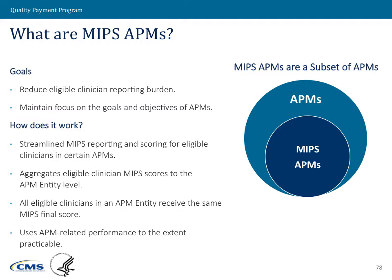So what are MIPS APMs? The APM scoring standard is a way to bridge the gap between APM participants and the MIPS program. These two tracks overlap a little bit — if you're not in an advanced APM and excluded from MIPS, you'll still be subject to the MIPS reporting requirements and payment adjustments, but you're also doing activities under the APMs. This APM scoring standard is designed to make that a seamless transition and reduce the burden, by taking account of the activities you're already doing for purposes of the APM and translating those over to MIPS, so that you don't have duplicative or conflicting reporting across the two programs.